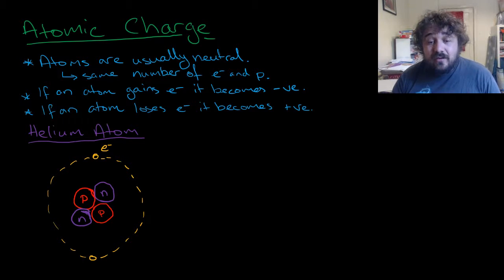Now, if an atom loses an electron, it becomes positive. So if we lose this electron here, what we end up with is two protons, so two positive charges, one negative charge, and the overall charge would be plus 1.